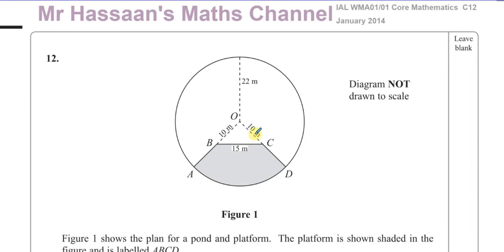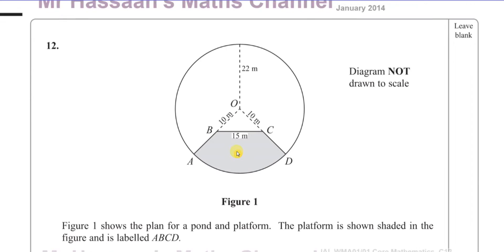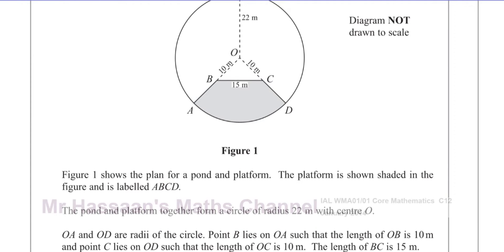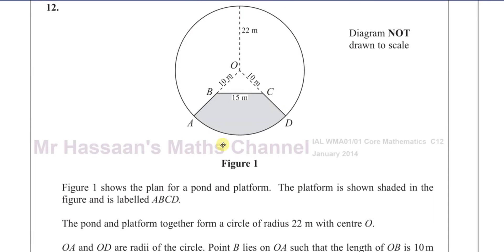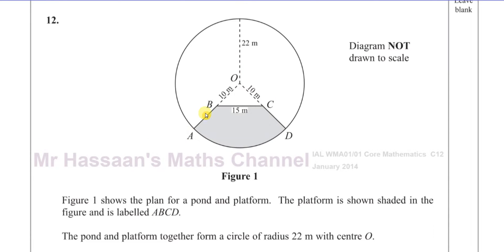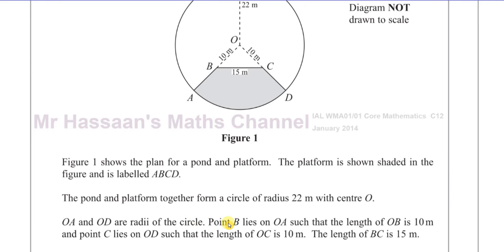This question is related to the new P1 syllabus, and the topic is radian measure. We have a plan for a pond and a platform. The platform is shown shaded and labeled ABCD. The pond and platform together form a circle of radius 22 meters and center O. OA and OD are both radii of the circle, so the length from O to A and O to D is 22 meters.